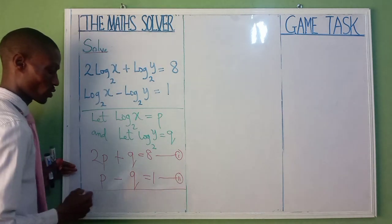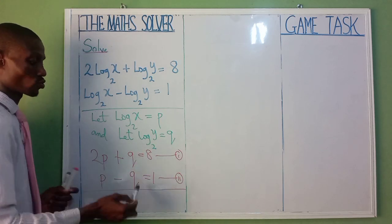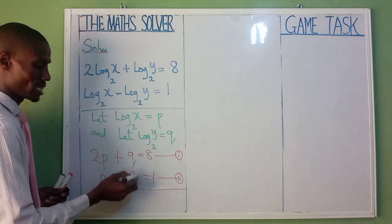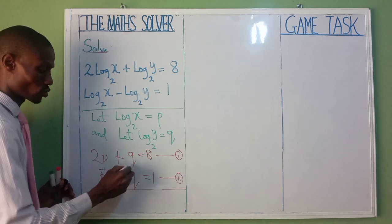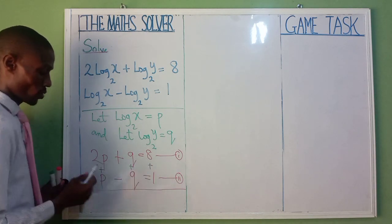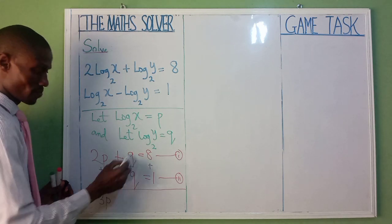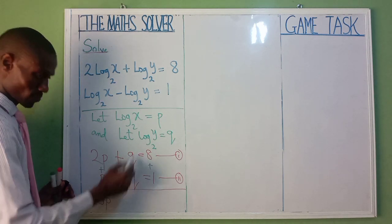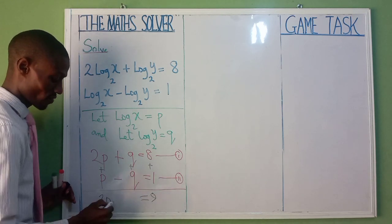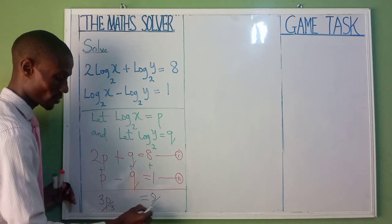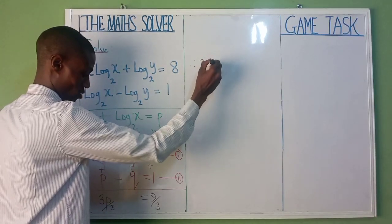Now because it's a simultaneous equation, we are going to add the two together, so that we can eliminate our q. We add equation 1 and equation 2 together. 2p plus p, that is 3p. p plus minus q, that's 0, equal to 8 plus 1, that is 9. We divide by 3. Therefore, p equal to 3.